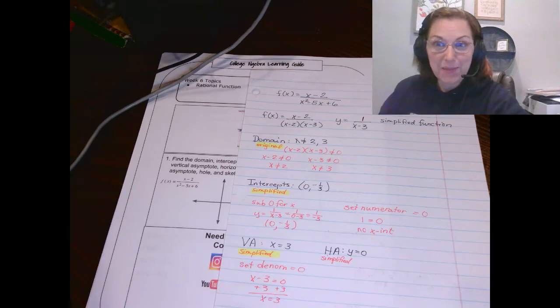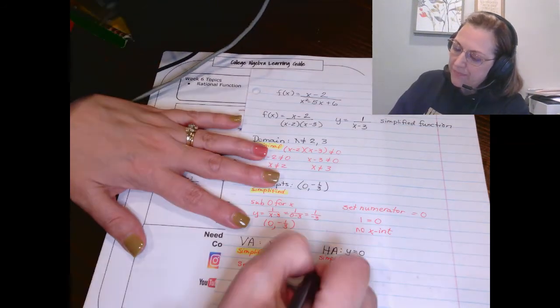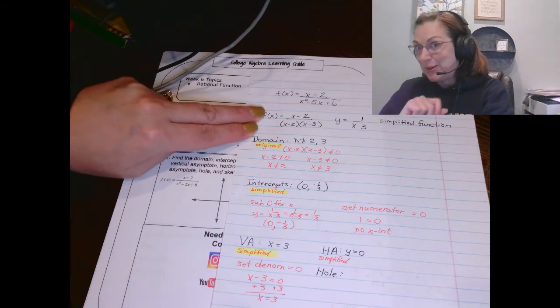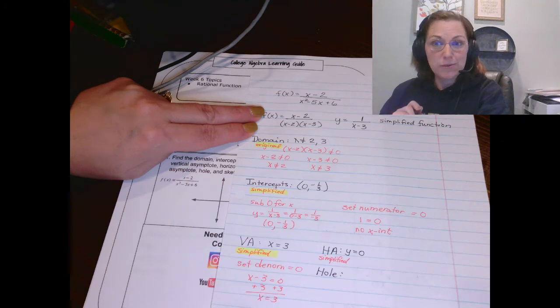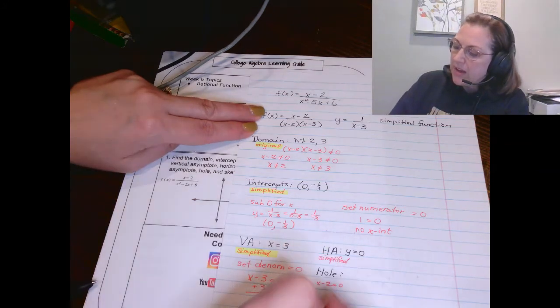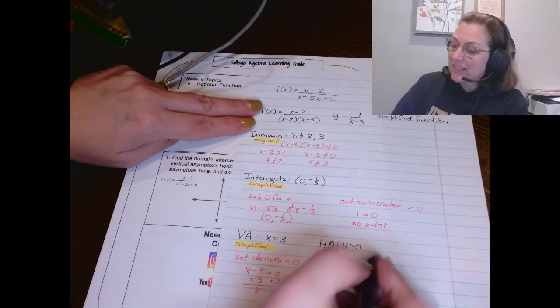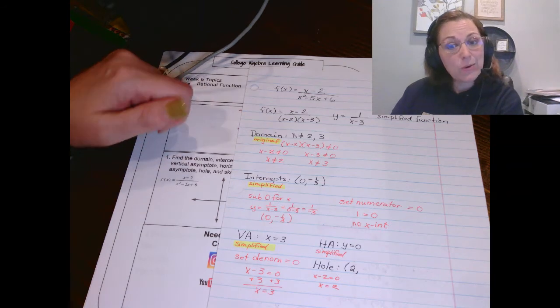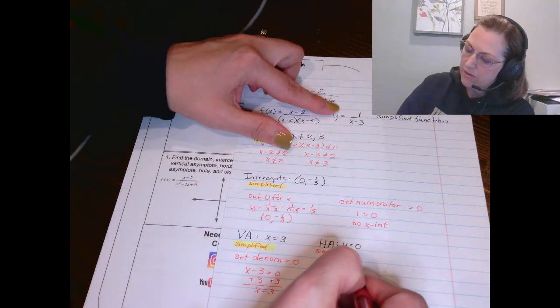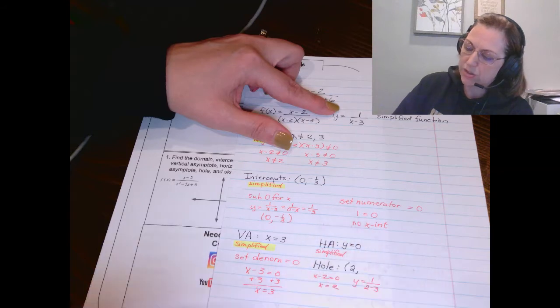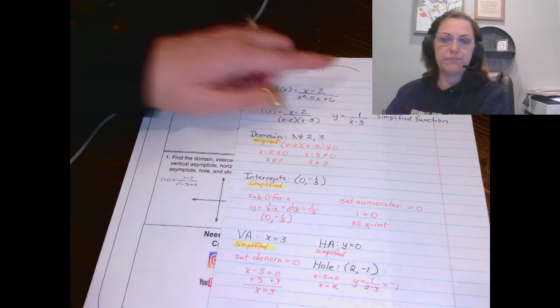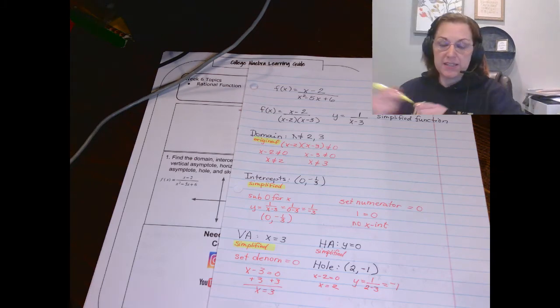I forgot one more. We've got the hole. So the hole. Remember back when we did the original function that x minus 2 canceled? That's letting you know there is a hole. Now, that x minus 2, we set it equal to 0 and we find that x equals 2 is the x coordinate for our hole. But we need the y coordinate also. So now we take this value and we plug it into the simplified function. So y equals 1 over 2 minus 3. So I get that y is negative 1. So that tells me my hole is at 2 negative 1. And we found all of the pieces that we need to draw a sketch.